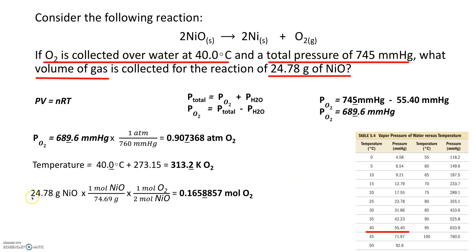We convert 24.78 grams of nickel(II) oxide using its molar mass to moles of nickel(II) oxide, then apply the ratio: 2 moles of nickel(II) oxide per 1 mole of O2, as given in the balanced equation. Following significant figures for multiplication, we start with four sig figs from 24.78 grams — treating conversion factors as exact — so our answer has four sig figs. I underline the eight to indicate this.